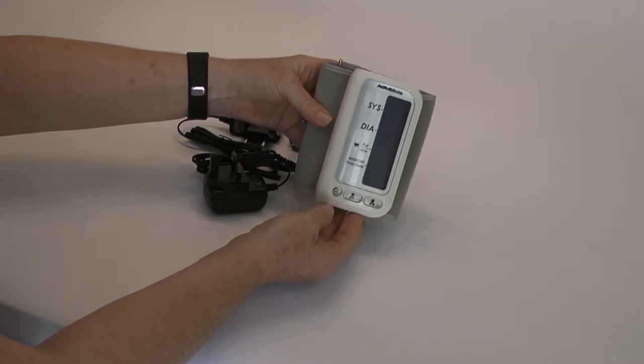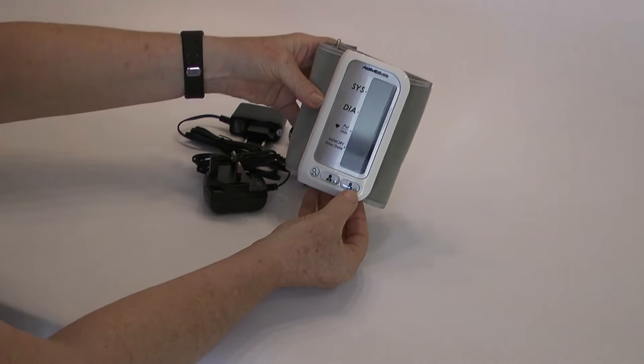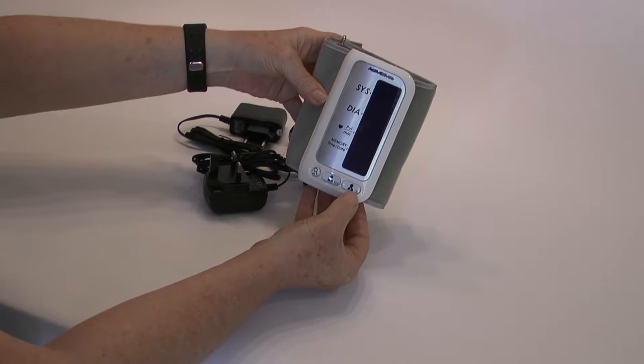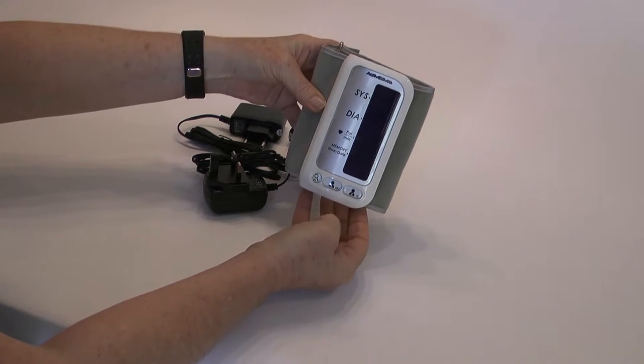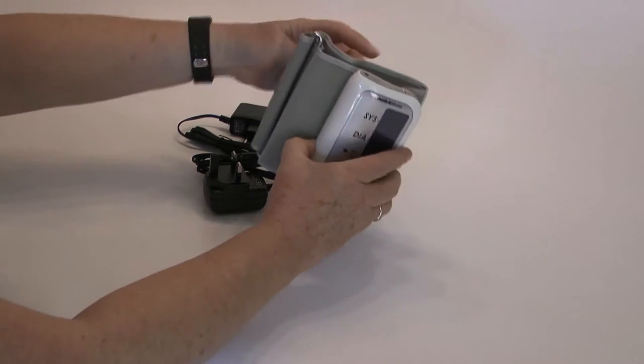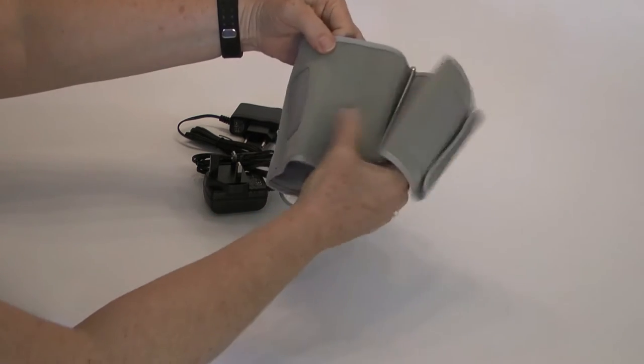There are two user buttons at the bottom of the device: user 1 and user 2. User 2 can also be used to associate a particular blood pressure monitor with your account.